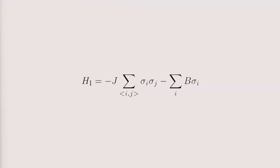I'm just going to start the talk by throwing up an image. Does anyone know what this is? There are probably some condensed matter people — exactly, it's an Ising model. But if I were in a computer science department and showed this, they wouldn't say Ising model — they'd say that is a Restricted Boltzmann Machine. You can write down an energy function for a Restricted Boltzmann Machine that looks exactly like an Ising model, and that is absolutely no accident. The Boltzmann machine was inspired by the Ising model.